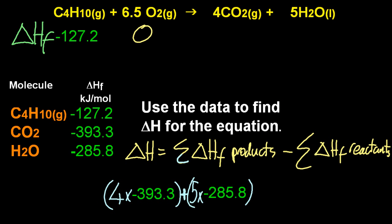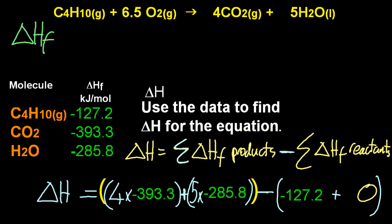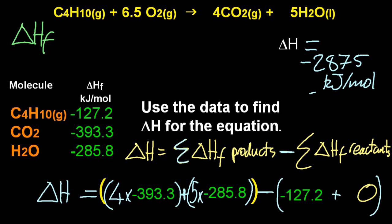So products minus reactants — keep an eye on the signs, there are a couple of minuses there. Hopefully Delta H comes out at negative 2875. It should be negative because we're combusting it — burning it.